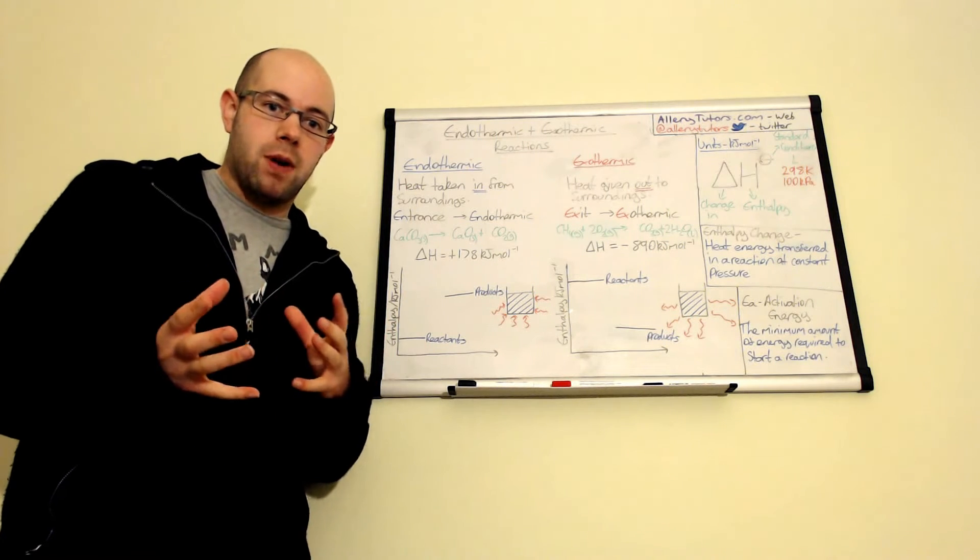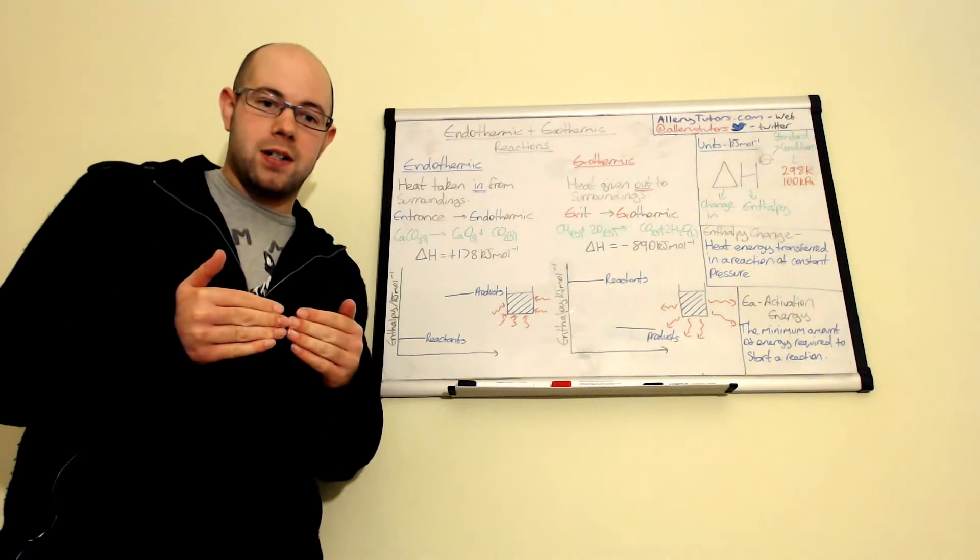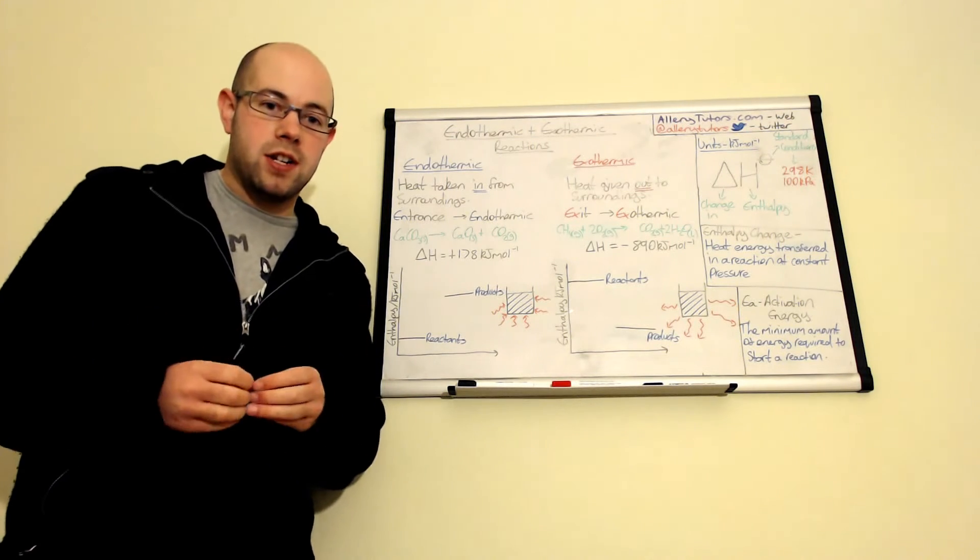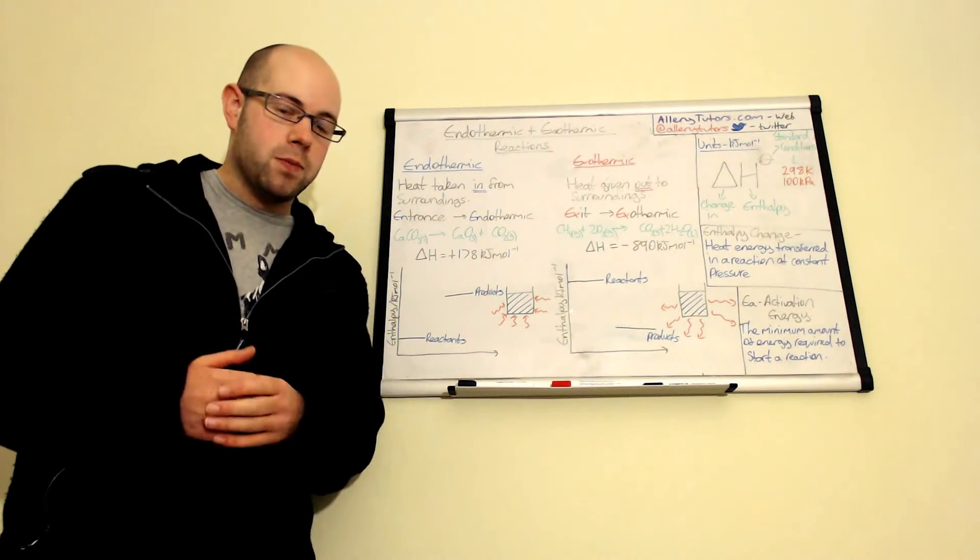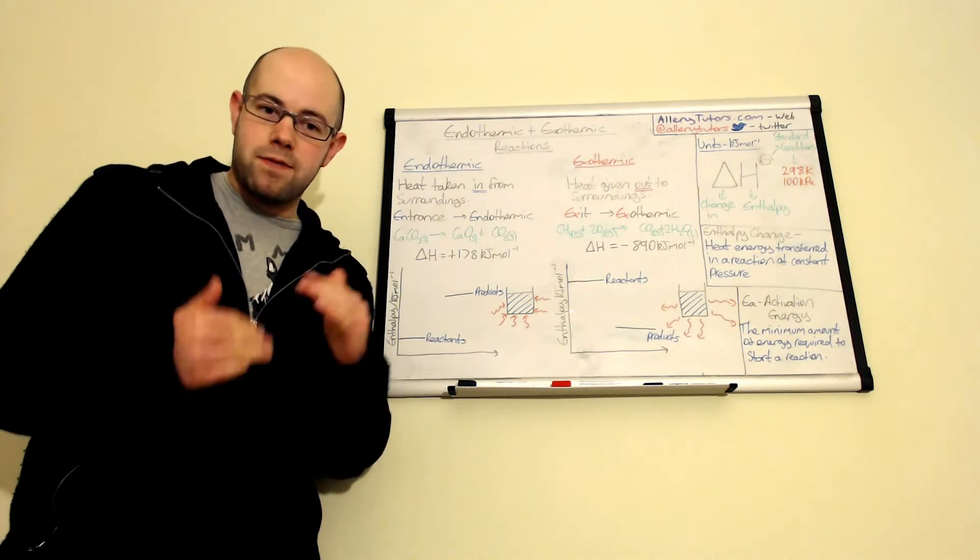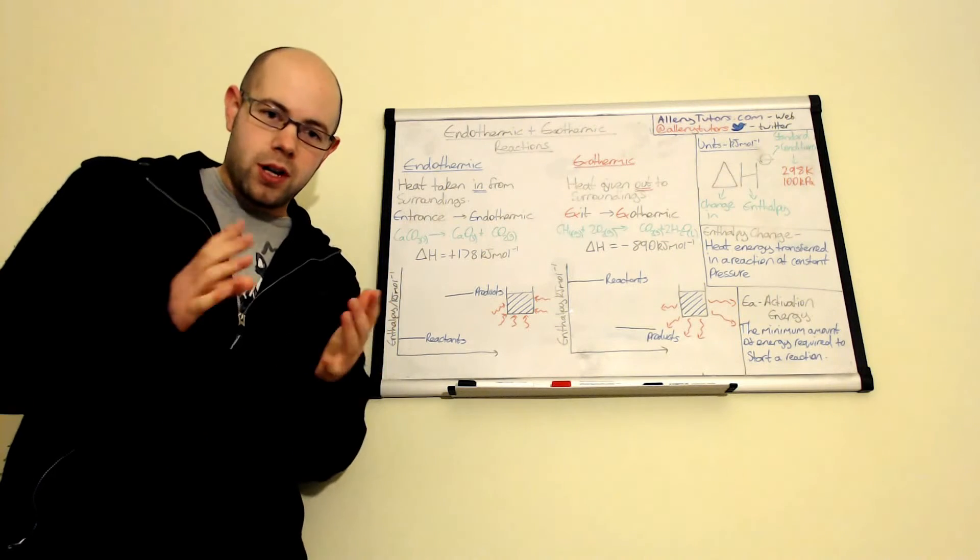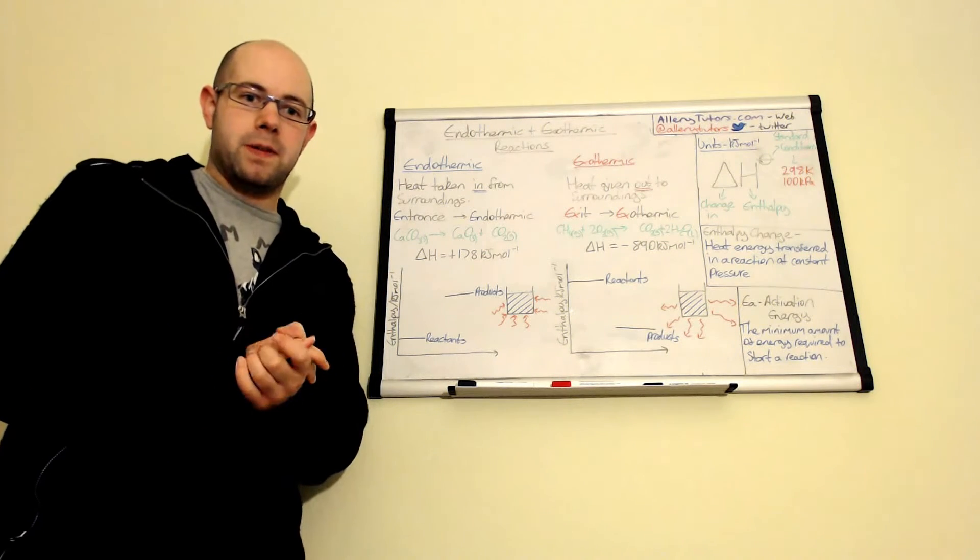We're measuring how much energy is required to break the reactant bonds and how much energy is given out when they reform to form products. The difference between that is called an enthalpy difference, which I'll come onto in a minute. But we'll look at what exothermic and endothermic means first.